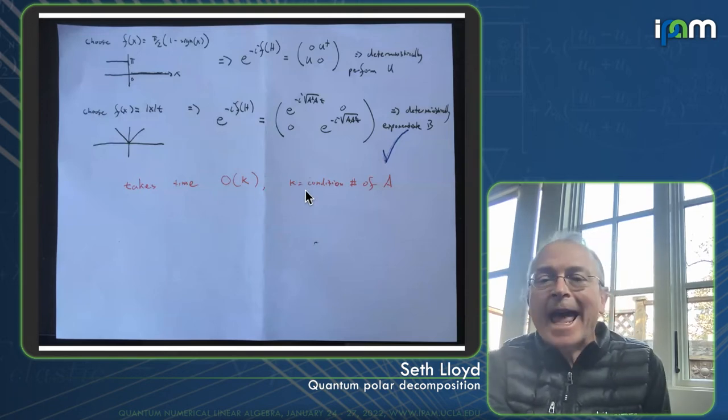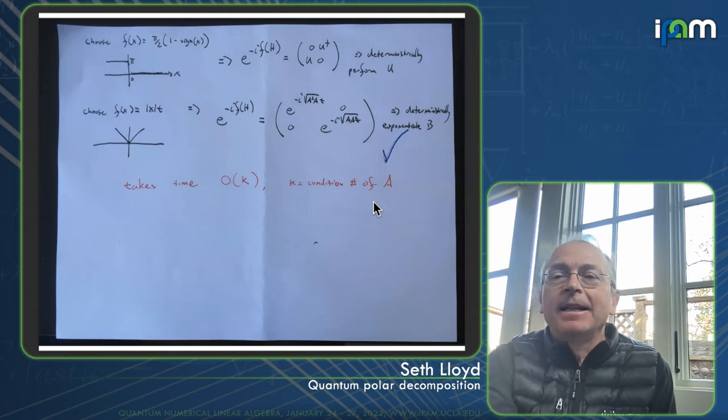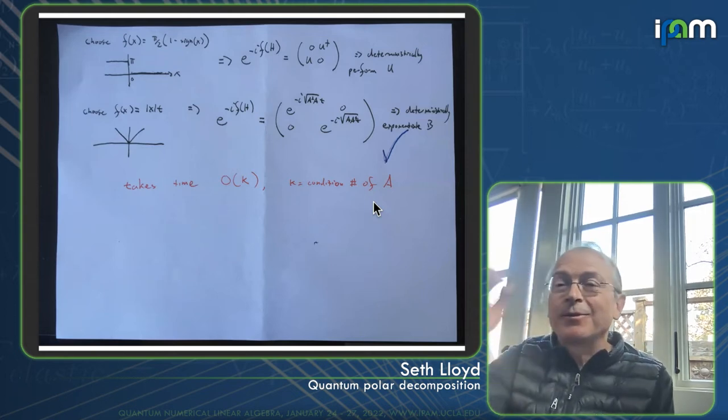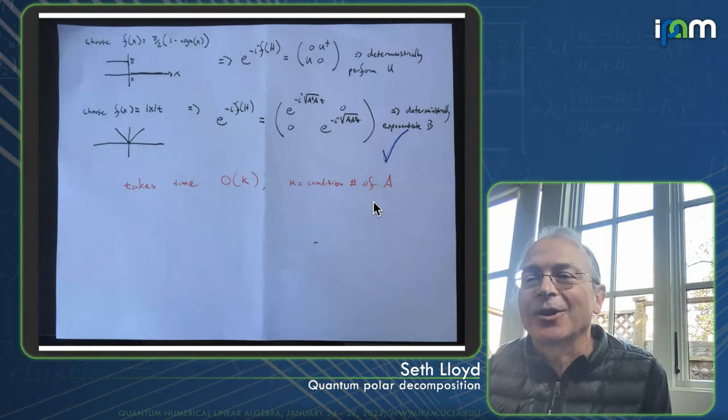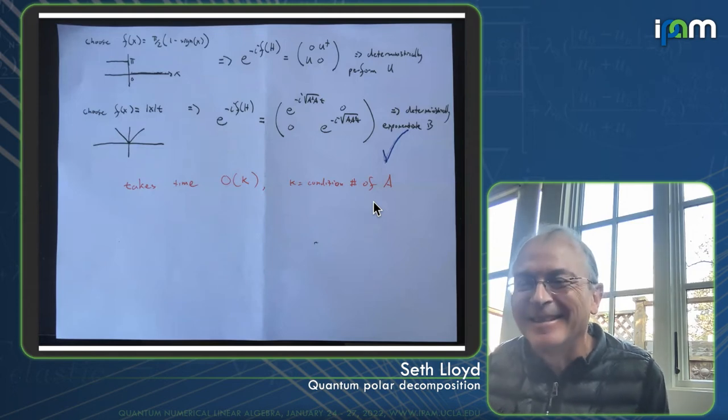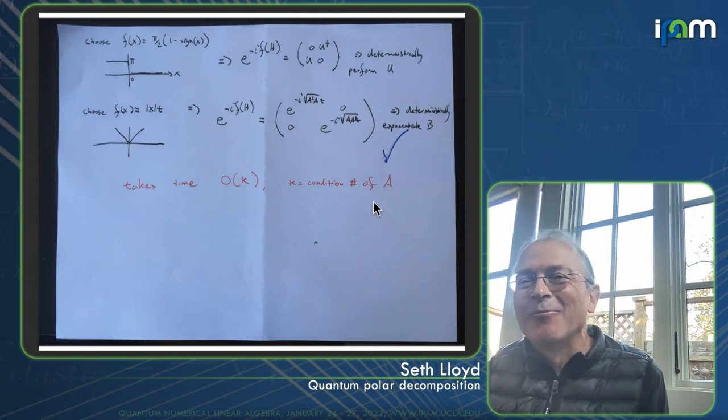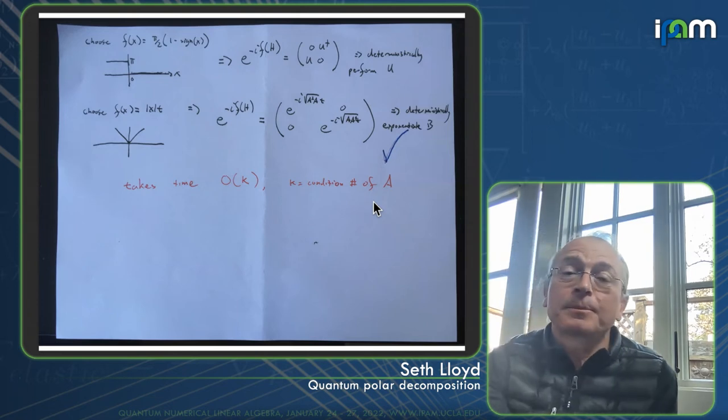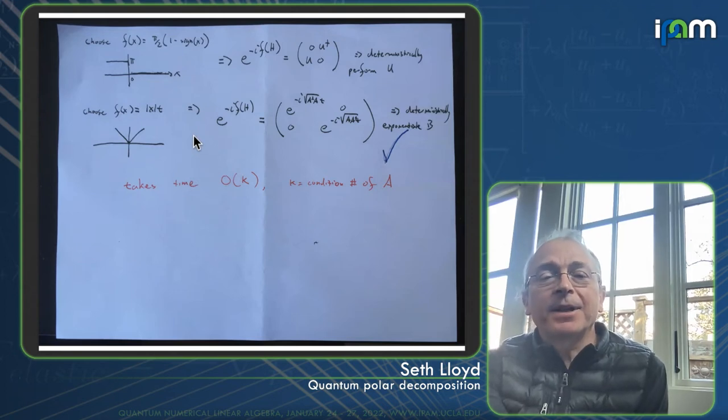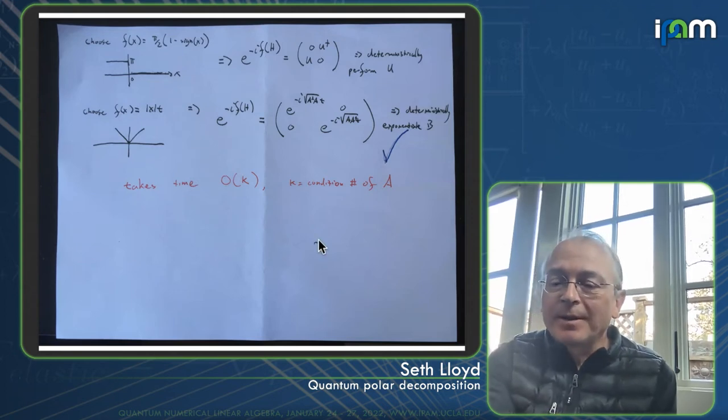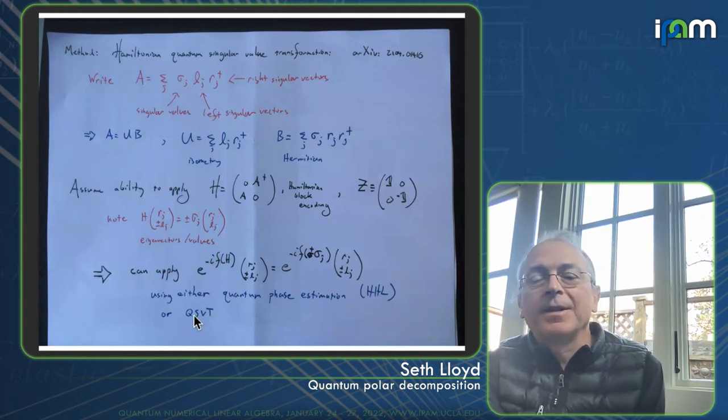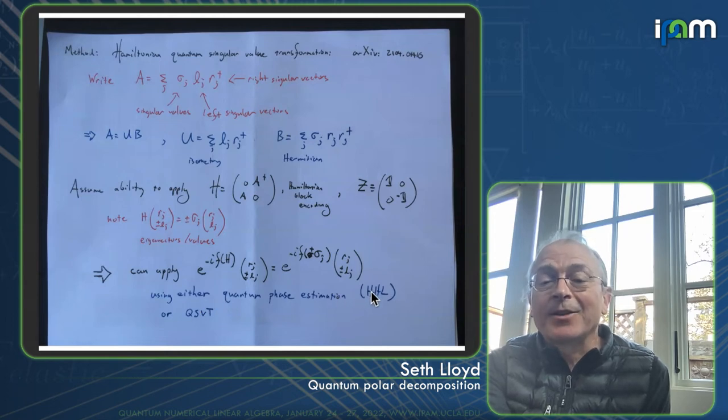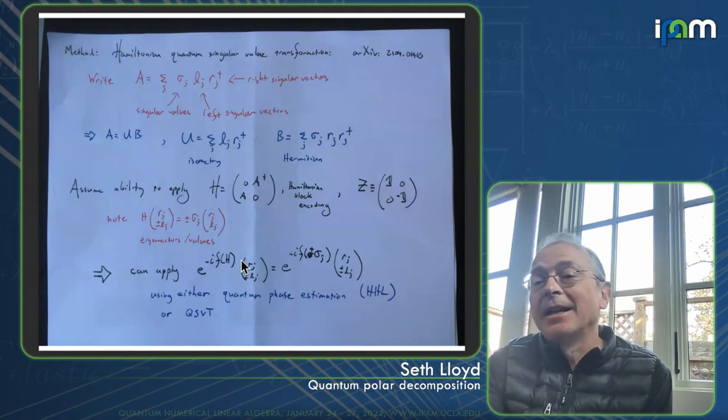And all of these take time order kappa, where kappa is the condition number of a. And it's interesting to note here that, well, I don't know, you should never start a sentence that says it's interesting to note, because it's bound not to be interesting. But I'll just note it anyway, whether it's interesting or not, that in this particular case, you know, remember that the difference between using these Chebyshev polynomials and the quantum singular value transform and using the quantum phase estimation, the HHL version of this quantum singular value transform.